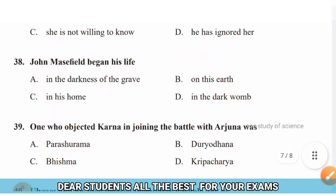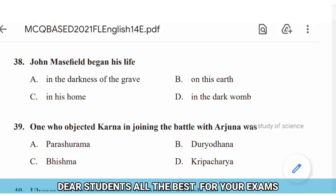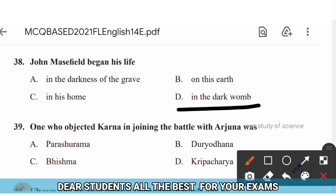Question 38: John Masefield began his life — options: in the darkness of the grave, on this earth, in his home, in the dark womb. The right answer is option D — John Masefield began his life in the dark womb.